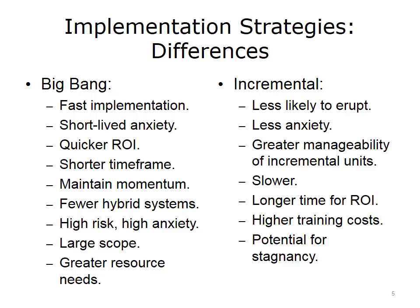In comparing the two approaches, one can readily see the differences. The Big Bang approach is fast, so anxiety is short-lived, and you have the potential for a quicker realization of return on investment. The implementation is accomplished in a shorter timeframe, so you are able to maintain momentum. You don't need to worry about problems that having to use a hybrid paper and electronic system presents. At the same time, there is higher risk, higher anxiety, larger scope, and the need for greater numbers of resources for training and implementation support. With incremental strategies, problems are less likely to erupt. There is less anxiety and greater ability to manage implementation of incremental units. At the same time, the implementation is slower, it takes longer to see the return on investment, there are higher training costs, and there is the potential for stagnation.